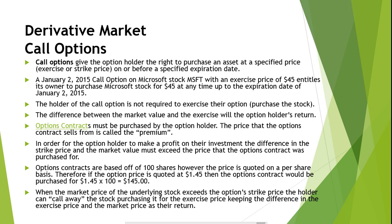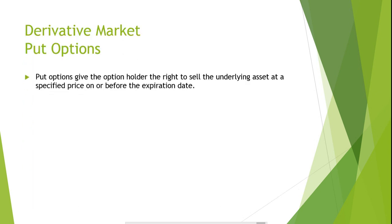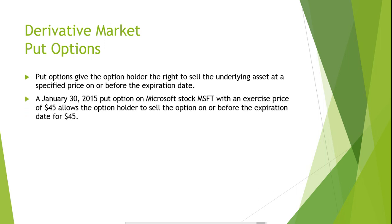In contrast to call options are put options. Put options give the option holder the right to sell the underlying asset at a specified price on or before the expiration date. A January 30, 2015 put option on Microsoft stock with an exercise price of $45 allows the option holder to sell the option on or before the expiration date for $45.